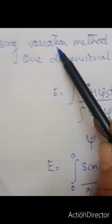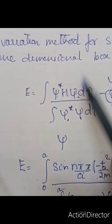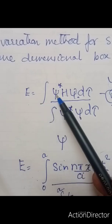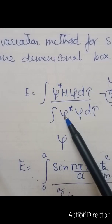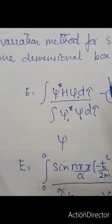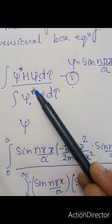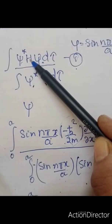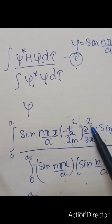Now we will use the variation method for solving the one-dimensional particle-in-a-box equation. From the variation theorem, energy equals the integral of psi* H psi d-tau divided by the integral of psi* psi d-tau. The wave function psi is sine(n*pi*x/a), and the Hamiltonian H is minus h-bar squared upon 2m times d-squared upon dx-squared.